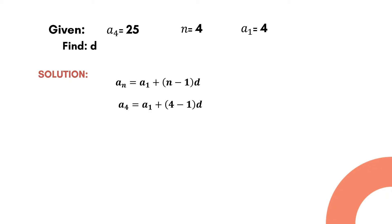Next is to substitute the values from the given. So the value of a sub 4 is 25, the value of a sub 1 is 4, and since d is the unknown value, we just have to copy the variable.